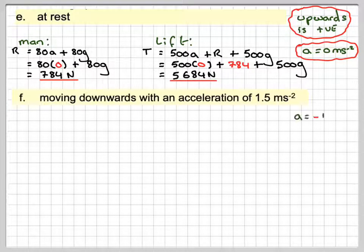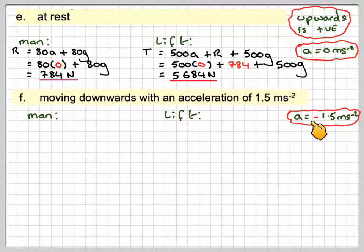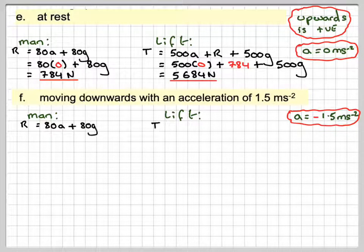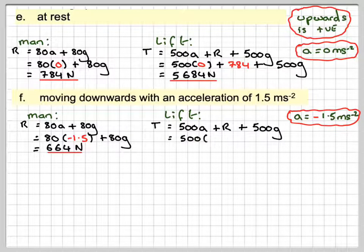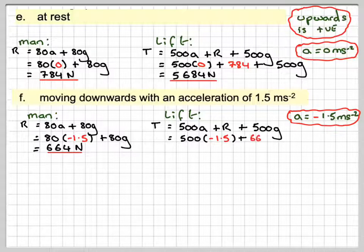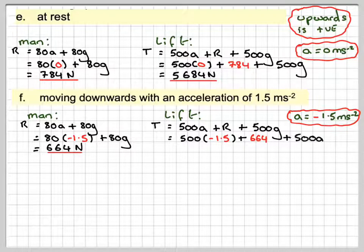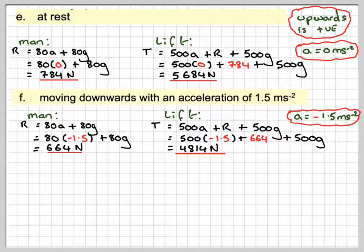Case 5: the lift accelerates downward at 1.5 m/s². Since upwards is positive, a equals minus 1.5. Using the same equations of motion and substituting a equals minus 1.5, the reaction is 664 newtons. The tension is T equals 500 times minus 1.5 plus 664 plus 500g, giving 4814 newtons.